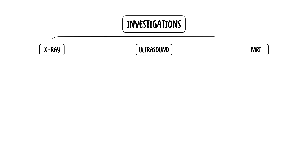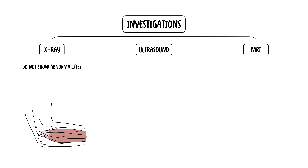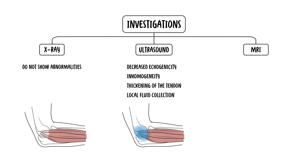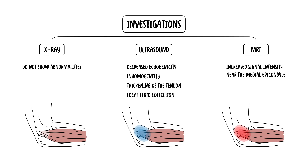Investigations for medial elbow tendinopathy: imaging tests such as x-rays, ultrasounds, and MRIs are not routinely performed but can be useful. Typically, x-rays do not show abnormalities, whereas ultrasound might reveal decreased echogenicity, inhomogeneity, and thickening of the tendons, sometimes accompanied by a local fluid collection. MRIs can show increased signal intensity near the medial epicondyle.